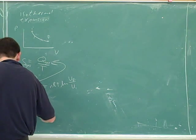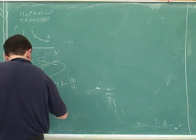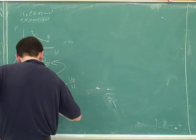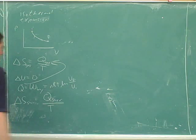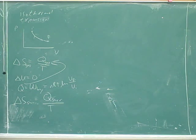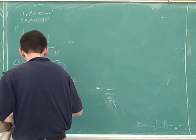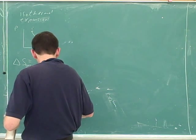How about the delta S of the surroundings? Well, you know that the Q of the surroundings would be opposite of the Q of the gas. That's right. And then you just need the temperature of the system.